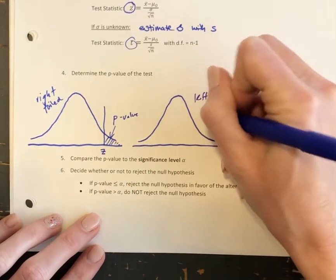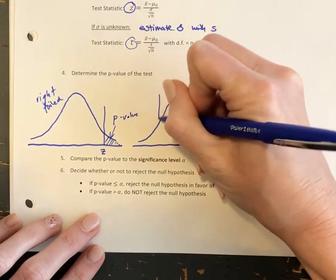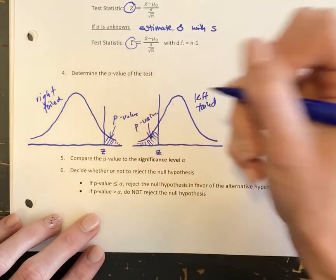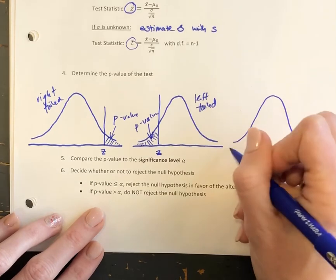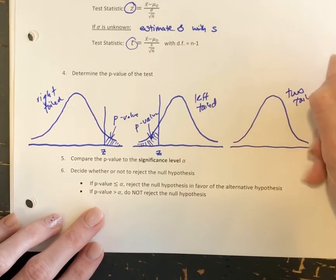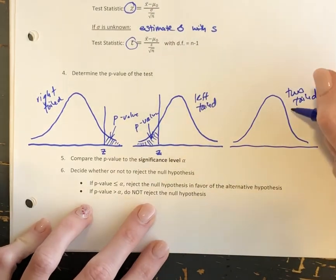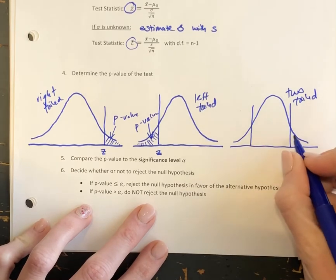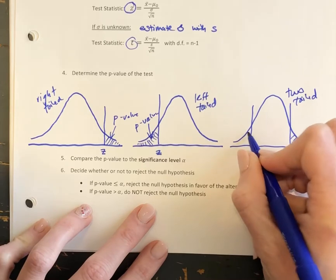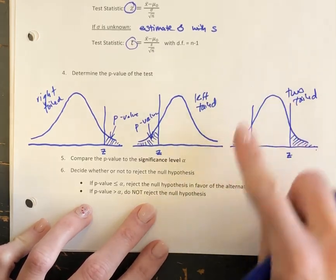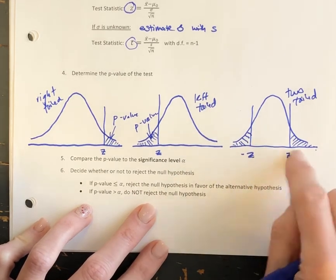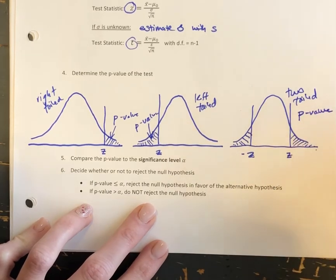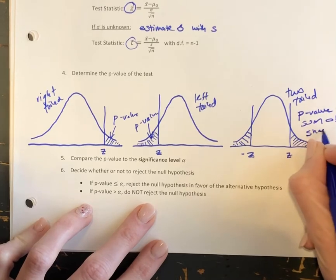If we have a left-tailed test, the p-value is found by taking the area to the left of our test statistic. And finally, if we have a two-tailed test, whether we have a positive or negative value of our test statistic, we find the area that is more extreme than that test statistic on both sides. These areas are equal because the standard normal distribution is symmetric about zero, so you can find the area in one tail and multiply it by two. The p-value is the sum of those shaded areas.